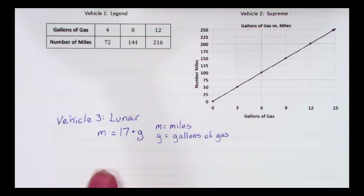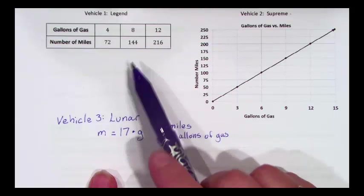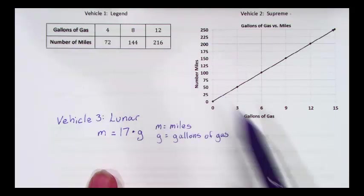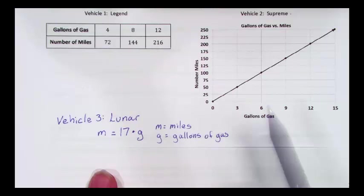In this example, we're going to look at three different ways to compare unit rates: using a table, using a graph, or using an equation.